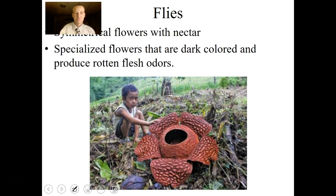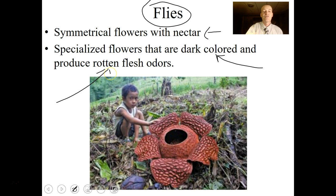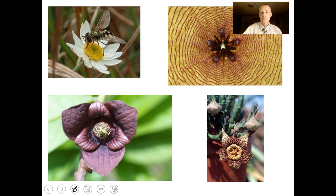Flies also pollinate flowers. Fly-pollinated flowers are often symmetrical with lots of nectar, dark colored to look like rotting flesh, and they produce rotting flesh odors. There's a photo of a large flower with a small child beside it — you can see it's red to look like rotting flesh and has a rotting odor. Several of these flowers shown have rotting flesh colors and smells.